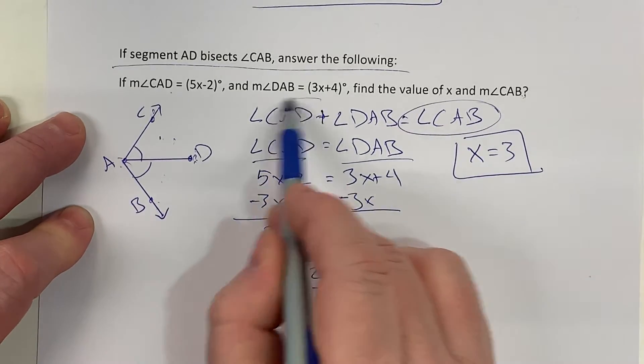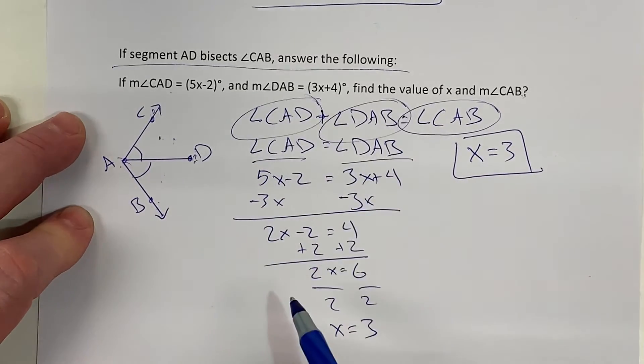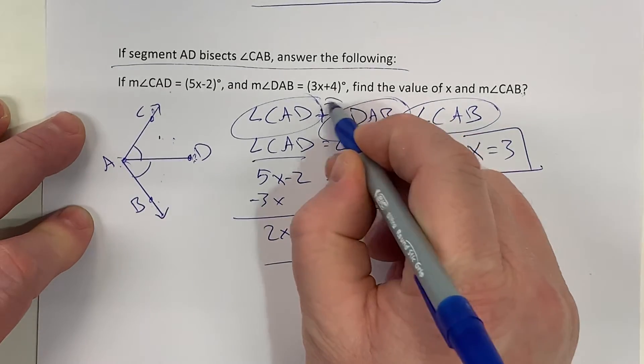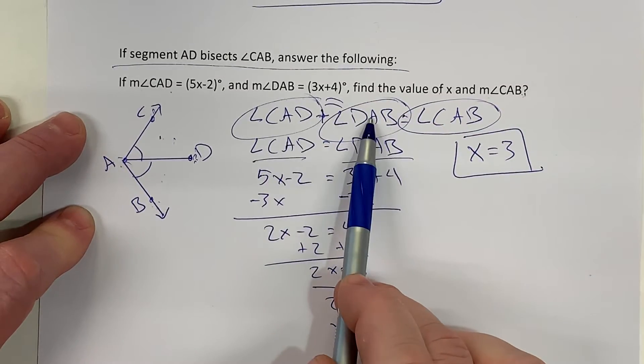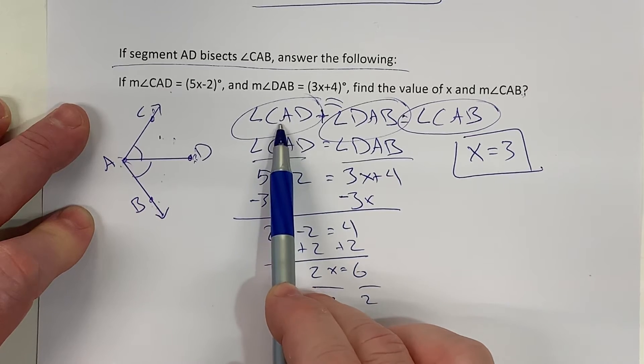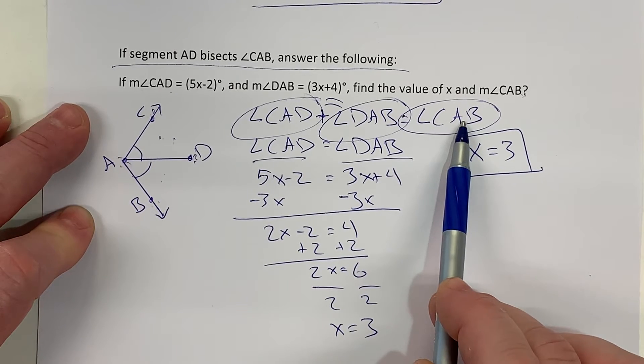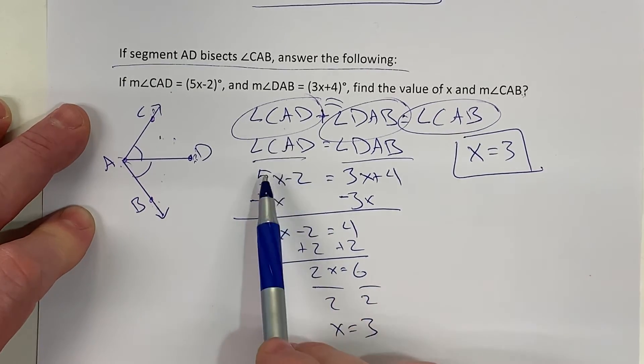Well, before I can find the measure of angle CAB, I need to know the measure of CAD and DAB. But what I know is CAD and DAB are both equal. So if I have the value of one of them, I can double it and that's the value of CAB. So I'll just find the value of one, CAD.